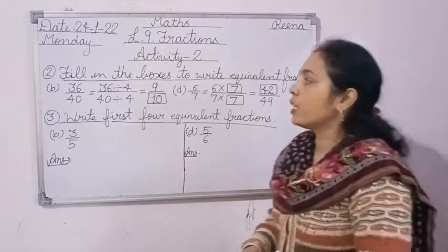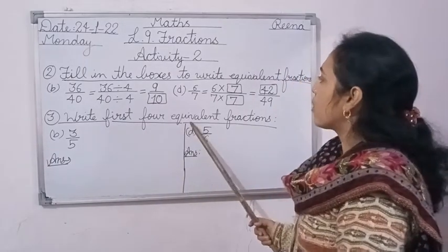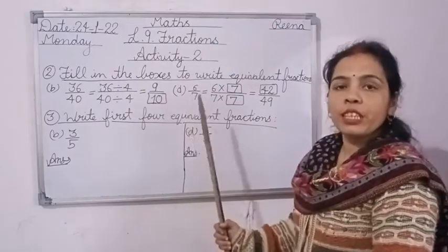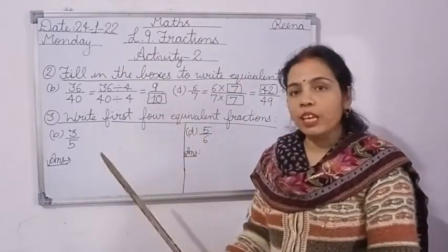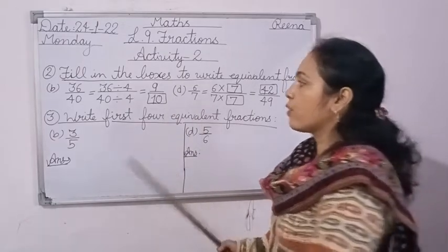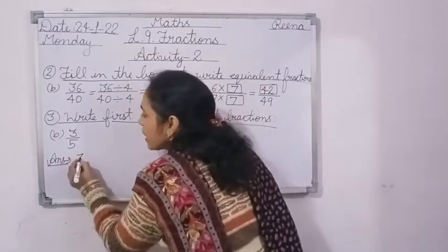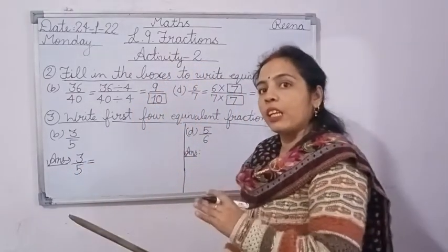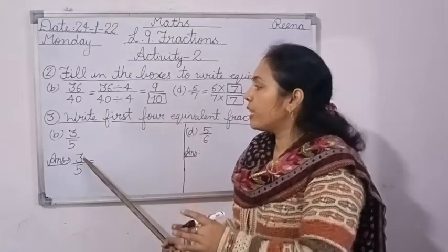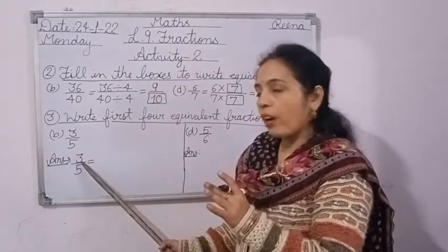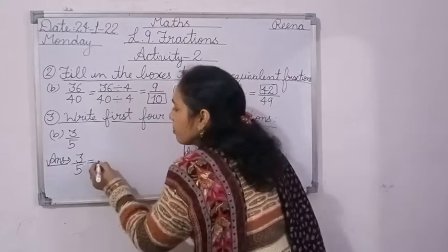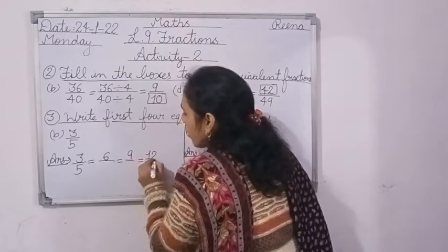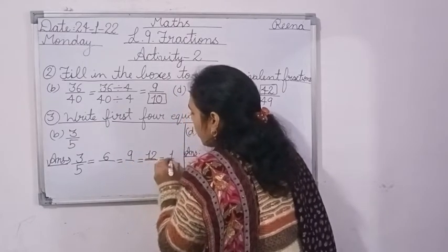In question number 3, write the first 4 equivalent fractions for the given fraction. In each question you are given one fraction. For 3 upon 5, first write the fraction itself, then read the table of 3 for the numerator: 3×1=3, 3×2=6, 3×3=9, 3×4=12, 3×5=15.